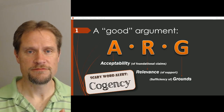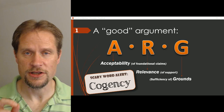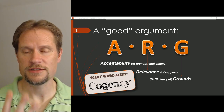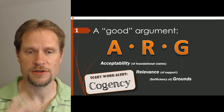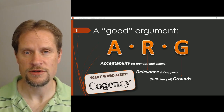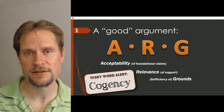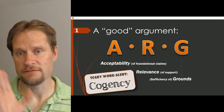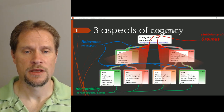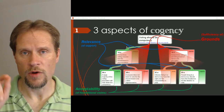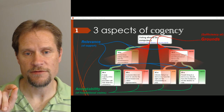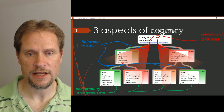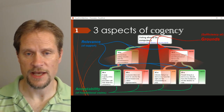Just to review, every good argument — every cogent argument — successfully meets three different standards for goodness: the A, the R, and the G. We're doing the R, relevance of support. Not only do we have to start at good spots, at acceptable claims, but those need to lead to our conclusion and not off in some other direction, some other tangent. What we're doing now is not focused on the starting points of the argument — we're focused on the connections between boxes. That's what relevance is focused on.